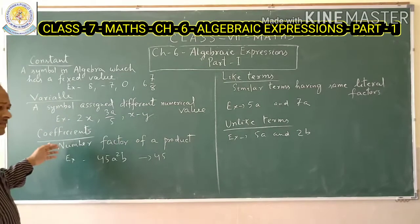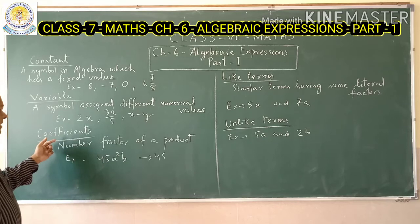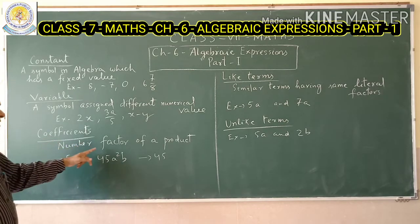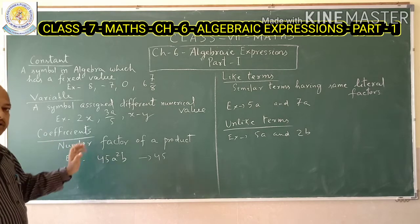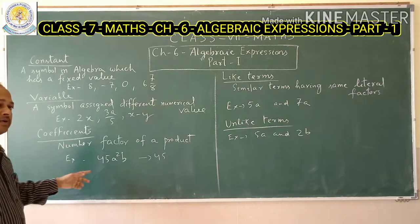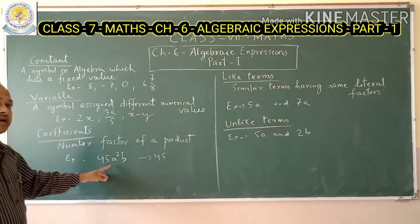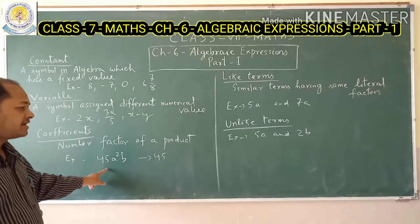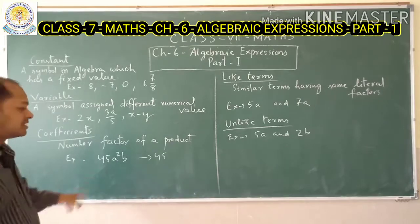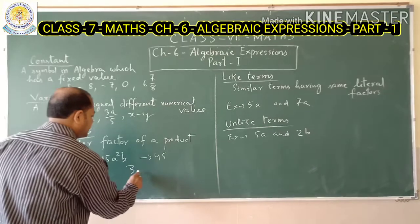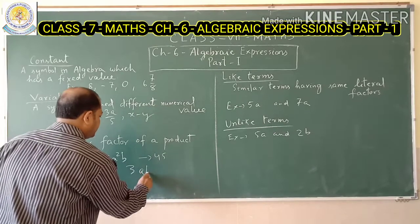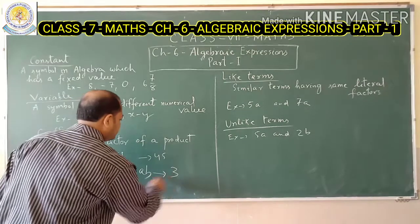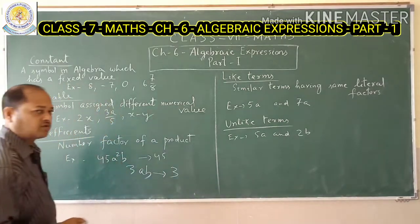Let's see what a coefficient is. Coefficients are the number factors of a product. For example, in 45s²p, 45 is the coefficient. Another example: in 3ab, 3 is the coefficient.